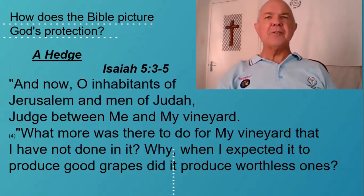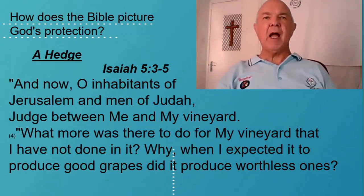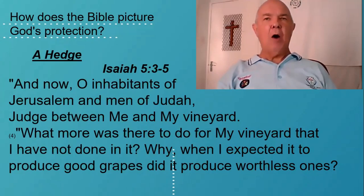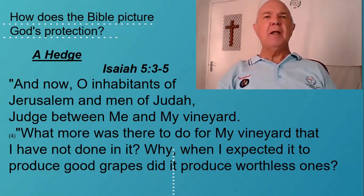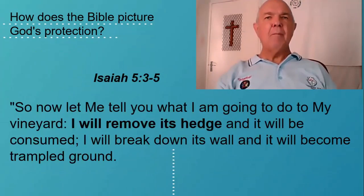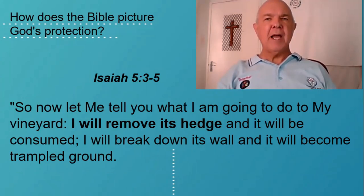For a rebellious Israel, the Bible also speaks of this hedge being removed for a season so that the enemies could overcome them. We see this in Isaiah chapter 5 verses 3 to 5: 'O inhabitants of Jerusalem and men of Judah, judge between me and my vineyard. What more was there to do for my vineyard that I have not done it? Why, when I expected it to produce good grapes, did it produce worthless ones? So now, let me tell you what I'm going to do to my vineyard. I will remove its hedge. It will be consumed. I will break down its wall and it will become trampled ground.'